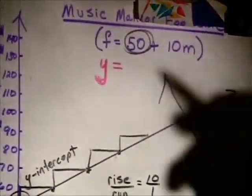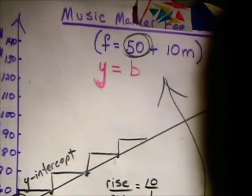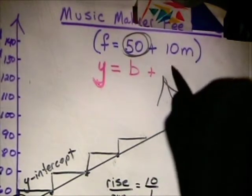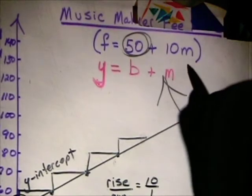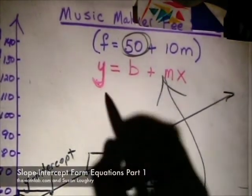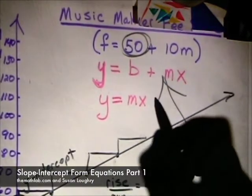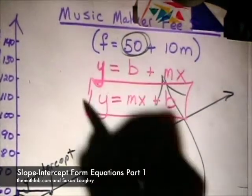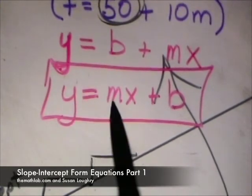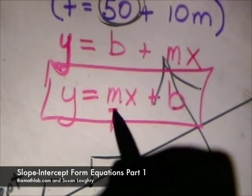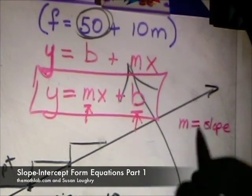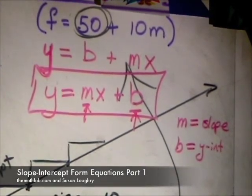They call the y-intercept b — I don't know why they selected that letter, but they did. The slope they call m, and the independent variable they always let be x. In every math book in every country all over the world, if you say 'put that in slope-intercept form,' it will always be y = mx + b — where m is the slope and b is the y-intercept.